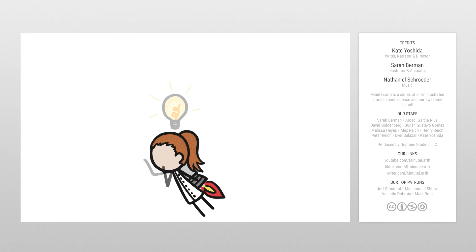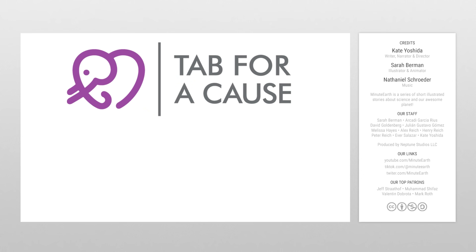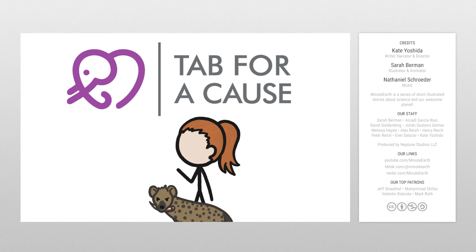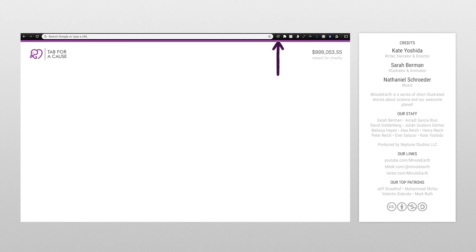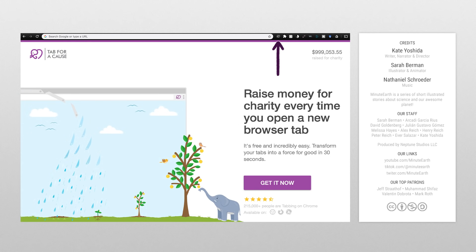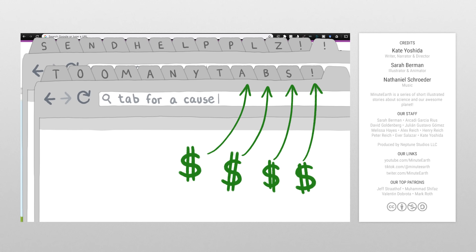Energy isn't always destructive. It can do good stuff, too. And with Tab for a Cause, you can actually do a ton of good with the teensiest bit of energy. Just install the browser extension, and Tab for a Cause will donate money to a charity each time you open a new browser tab.